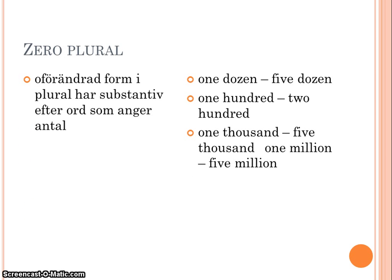Zero plural also applies when you have a noun after a numeral — it stays the same. One dozen, five dozen, one hundred, two hundred, one thousand, five thousand, one million, five million. Note that you don't add the s even if it's more than one.